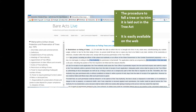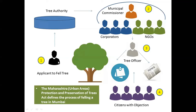I'll briefly explain the process for what happens when trees in your locality are selected for felling. The procedure is laid out in the Maharashtra Urban Areas Protection and Preservation of Trees Act. When an applicant — even if it's the BMC itself — wants to fell a tree, they must apply to the BMC's Tree Authority, which comprises the municipal commissioner and an equal number of corporators and NGO members. The Tree Authority sends a tree officer to investigate, and if the reasons are valid, a notice is affixed to the tree and an advertisement placed in the newspaper.